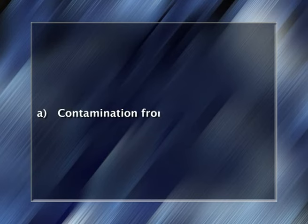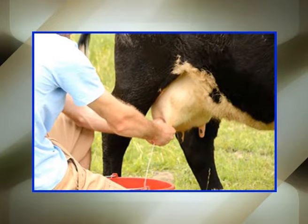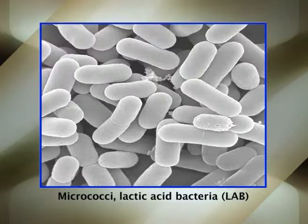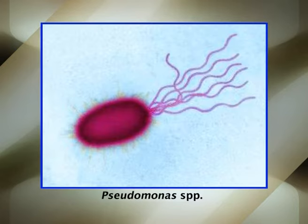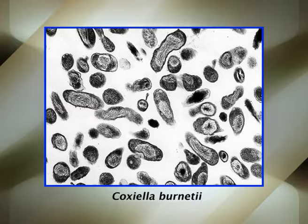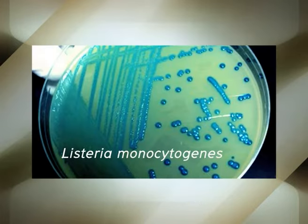Now let's understand the microbiology of milk, beginning with the initial microflora and contamination from the udder. Although milk produced from the mammary glands of healthy animals is initially sterile, microorganisms are able to enter the udder through the teat duct opening. Gram-positive cocci, streptococci, staphylococci, micrococci, lactic acid bacteria, Pseudomonas species, and yeast are most frequently found in milk drawn aseptically from the udder. Diseased cows may also shed human pathogens including Mycobacterium bovis, Brucella abortus, Coxiella burnetii, Listeria monocytogenes, and salmonellae.